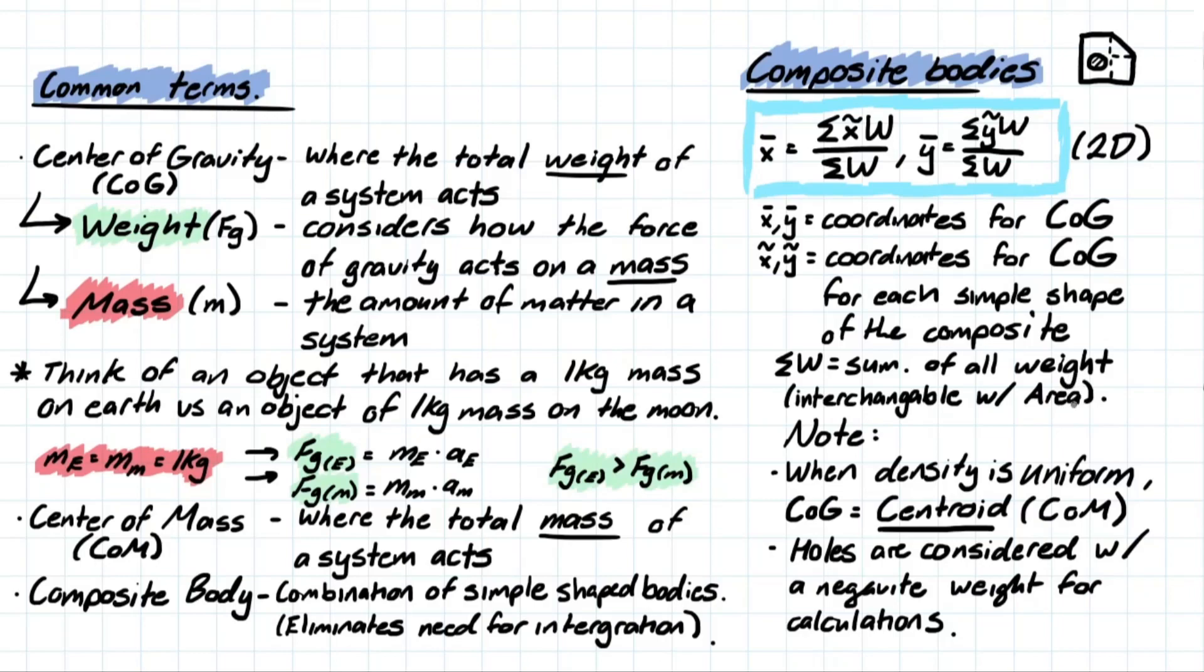That's simply because we assume that when density is uniform, the center of gravity is also going to equal the centroid or center of mass. But what does density being uniform mean? This means that the mass will be uniform throughout the entire section. This also means that the area is going to be directly proportional to the mass. This brings us to our last point where we talk about holes. We simply consider them as a negative weight for calculations, simply because they're removing area or weight from our entire system.